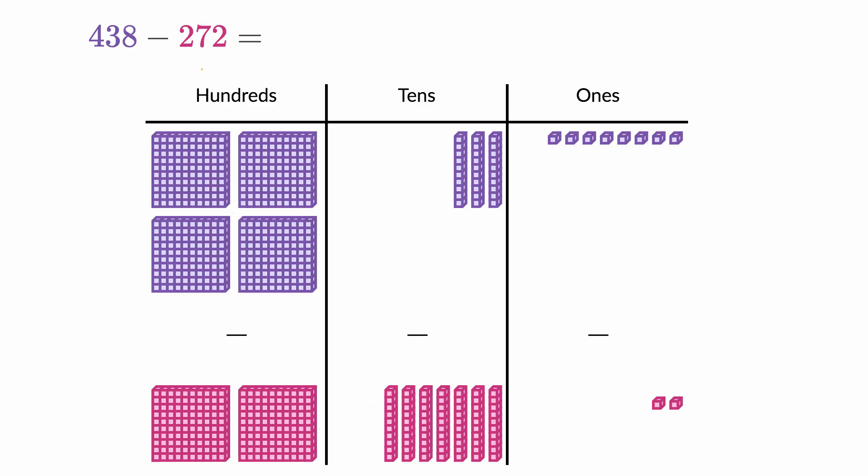All right, now let's work through this together. So first of all, we could start in the ones place. And we can see we have eight ones. And then we're gonna take away two ones. So that's pretty straightforward. We're just going to be left with six ones right over here.